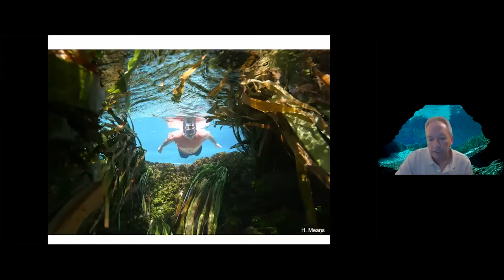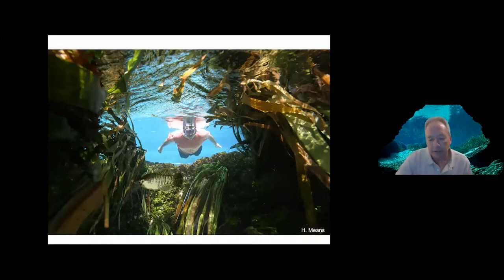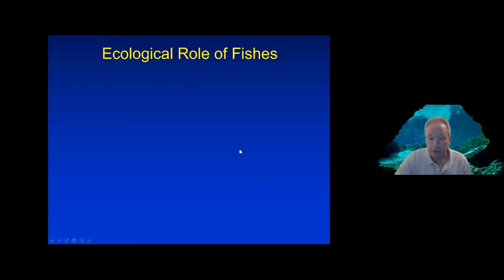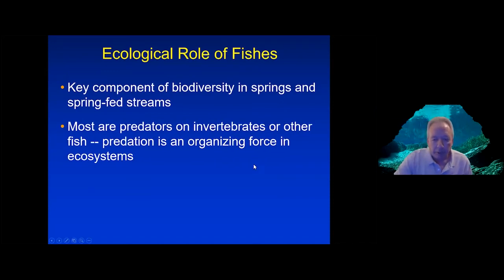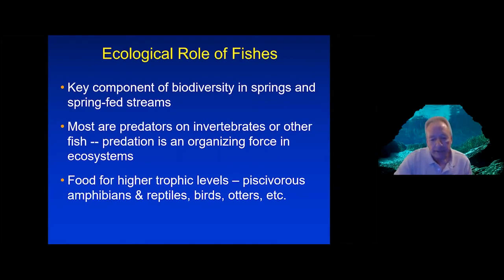Now I want to turn to another major group: when visitors to springs don mask and snorkel and go underwater, they're immediately impressed by the fish fauna. Let me first discuss some of the major ecological roles of fishes. They are key components of biodiversity in our springs and spring-fed streams, important predators on invertebrates or other fish — intermediate to higher within the food chain. Predation is an organizing force within these ecosystems, and fishes also provide food for organisms higher up in the trophic web.